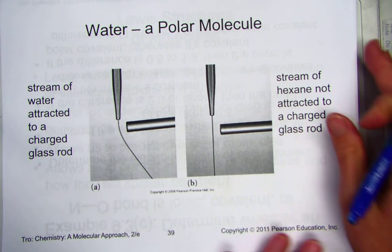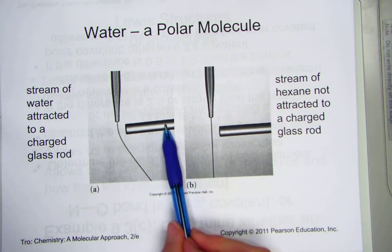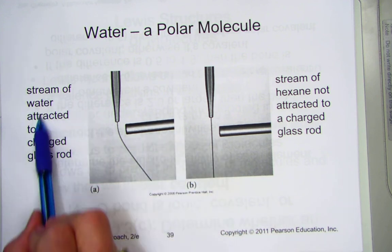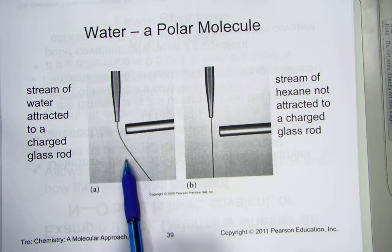Water is said to be a polar molecule and this is just an example of showing polarity using a glass rod that has been charged. If a stream of water is attracted to a charged glass rod, the water itself must also be charged.